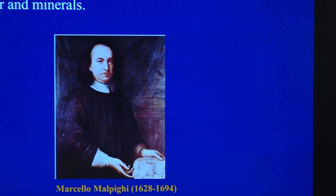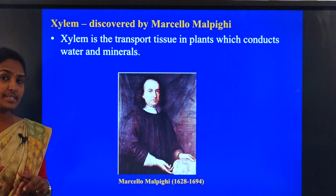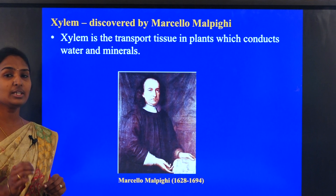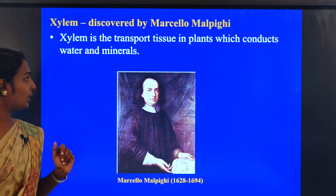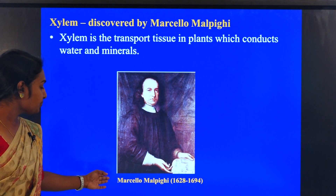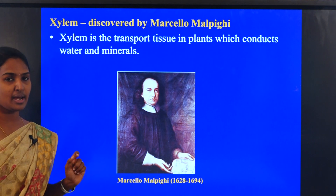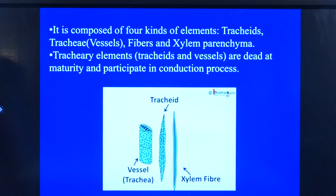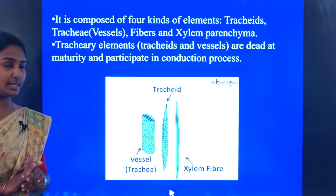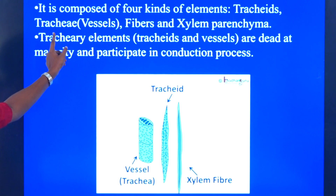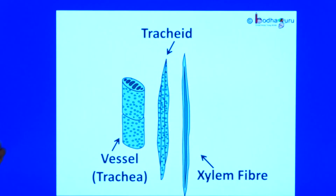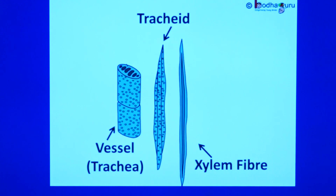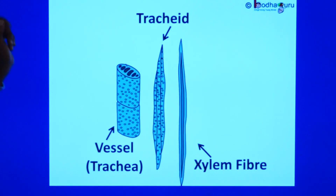Moving on to the next, that is xylem. The main function of xylem is that it is the transport tissue in plants which conducts water and minerals. Marcello is the one who discovered the xylem and its conduction in the plant. Xylem is composed of four kinds of elements: one is tracheids, another is trachea — also called vessels — another is fibers, and the last is xylem parenchyma. Trachea elements are dead at maturity and participate in the conducting process.